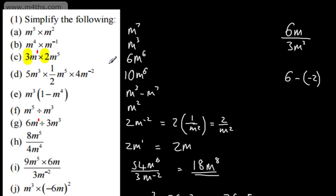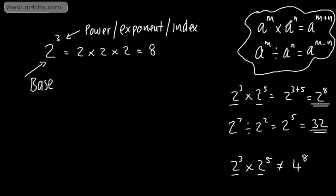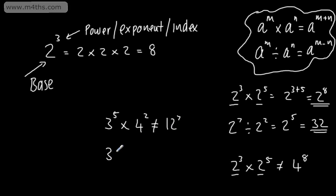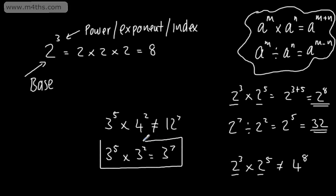So that's multiplication and division: if the bases are the same, multiply and add the powers; if dividing, subtract the powers when the base is the same. For example, 3 to the power of 5 multiplied by 4 to the power of 2 would not equal 12 to the power of 7 — for the rule to apply you need the same base, such as 3 to the power of 5 multiplied by 3 to the power of 2, giving 3 to the power of 7. With some values like 8 and 4, both multiples of 2, you can manipulate them to share a base, but in general use these laws only when bases are the same or can be made the same.